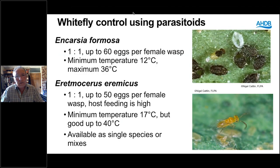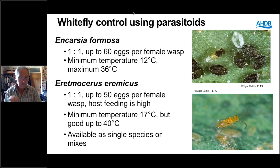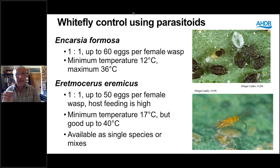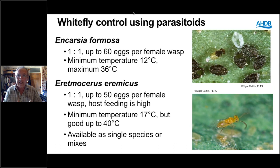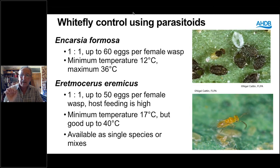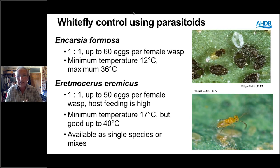Looking at the parasitoids for whitefly: Encarsia formosa has been around since the 1920s and is very useful on the glasshouse whitefly, but not so good on some of the other species. Eretmocerus is a better parasitoid in terms of other whitefly species — more expensive, works at a higher temperature but also tolerates lower temperatures. Available singly or as a mix of Encarsia and Eretmocerus. Eretmocerus also does more host feeding, which is why it's more expensive to produce.